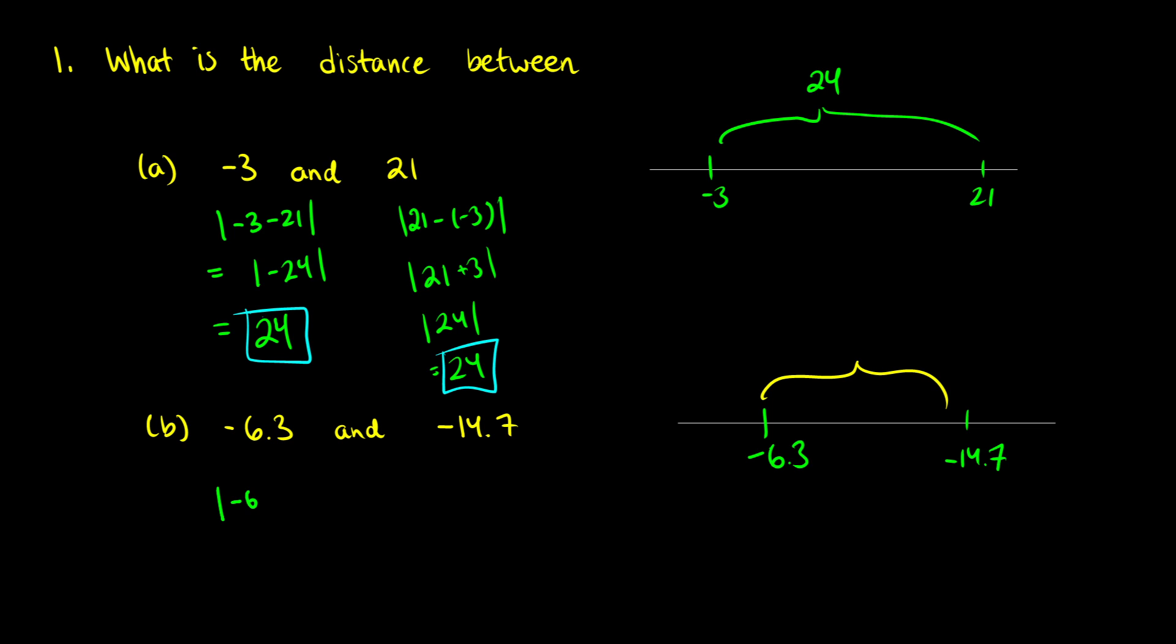I'm going to take negative 6.3 and subtract negative 14.7 from it. So I take the first number and subtract the second number. Yes, the two negatives are going to cancel out here to make a positive. We're going to get negative 6.3 plus 14.7, and that's going to be the absolute value.